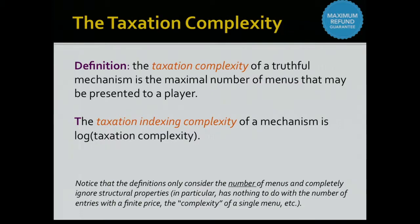Now we can define the taxation complexity of a mechanism. Fix some player i, vary all possible valuations of the others — vary v_{-i} — and count the number of menus presented to this player. That count is the taxation complexity of player i. The taxation complexity of the mechanism is the maximum over all players of that number. We'll work with the taxation indexing complexity, which is simply the log of the taxation complexity — the number of bits needed to represent an index into the set of all possible menus.